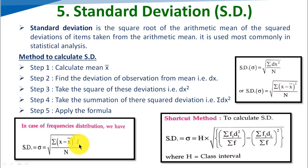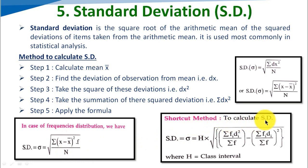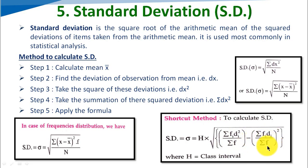In the case of frequency distribution, we use the formula: square root of sigma (x minus x-bar) squared into f, divided by n, where f stands for frequency. One shortcut method to calculate standard deviation uses the formula: SD = h times the square root of [sigma f·di squared divided by sigma f] minus [sigma f·di divided by sigma f] squared, where h stands for the class interval.